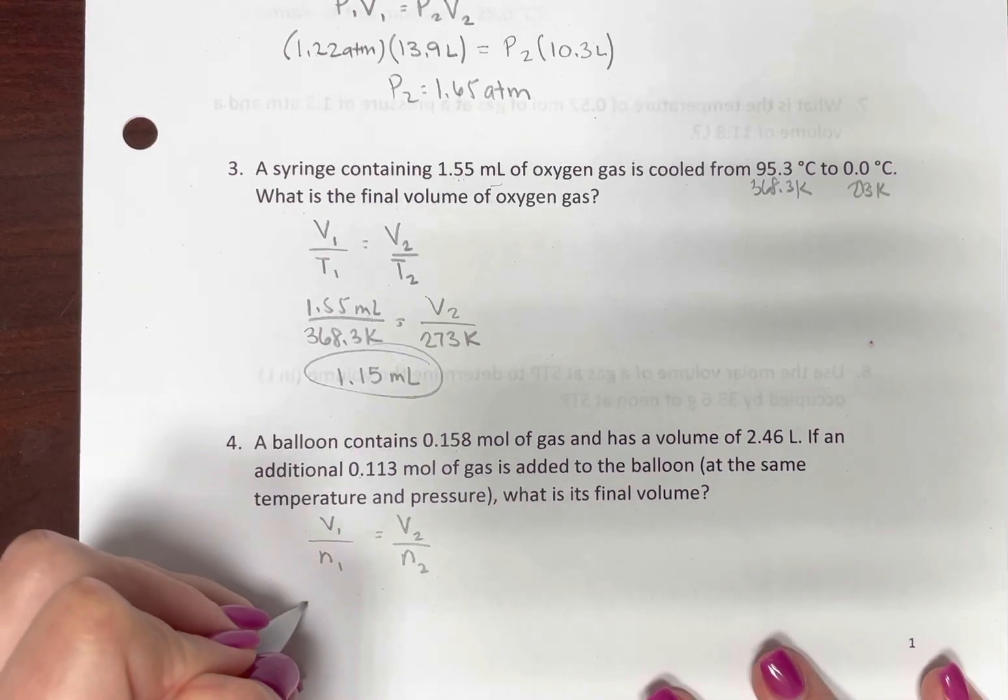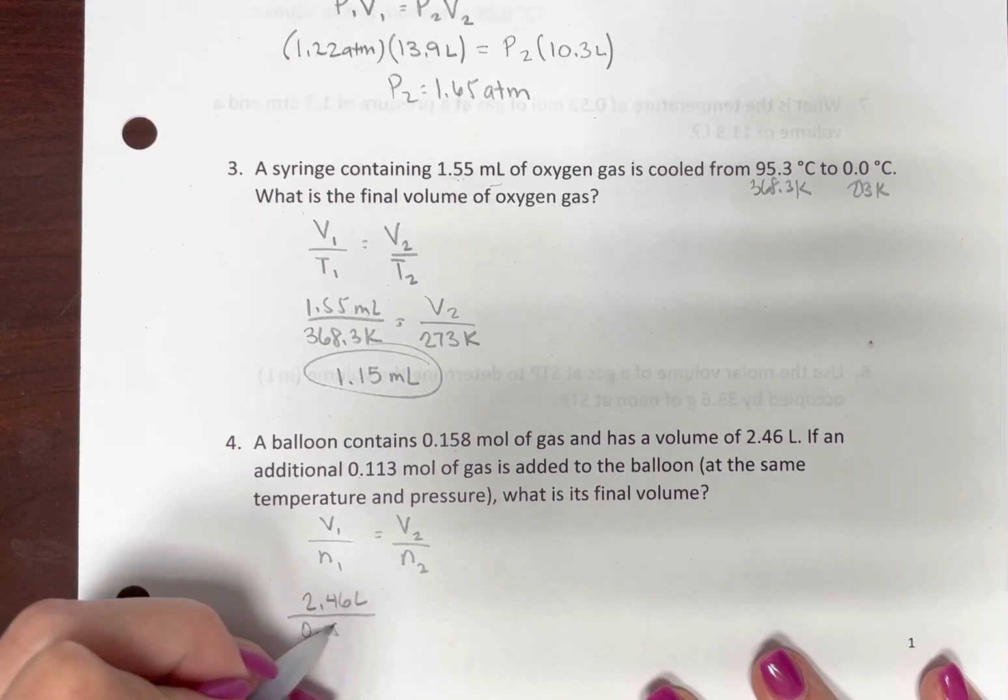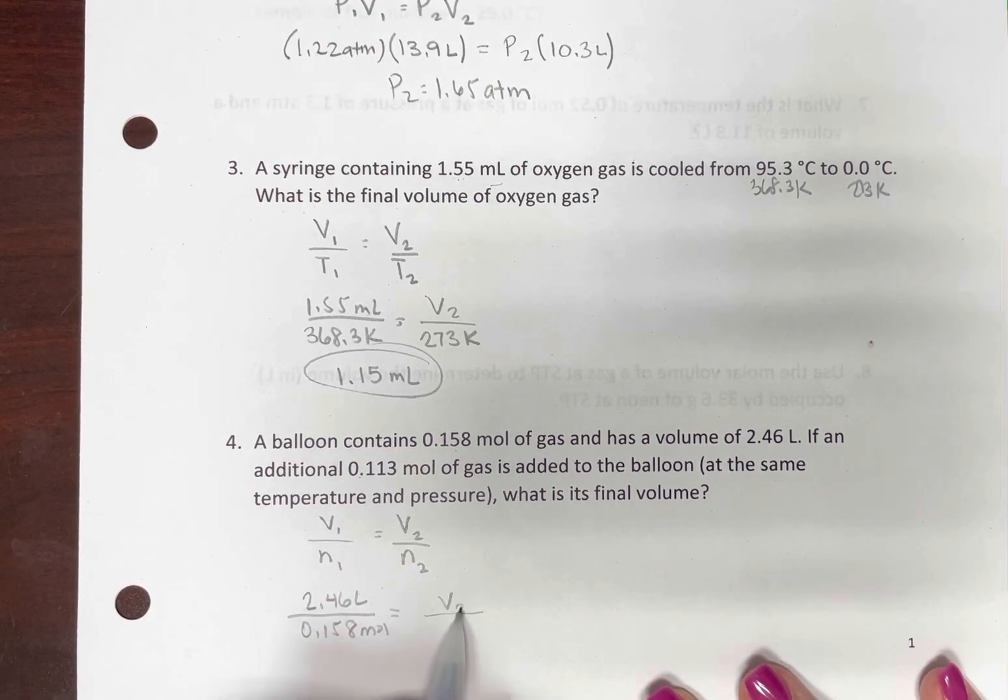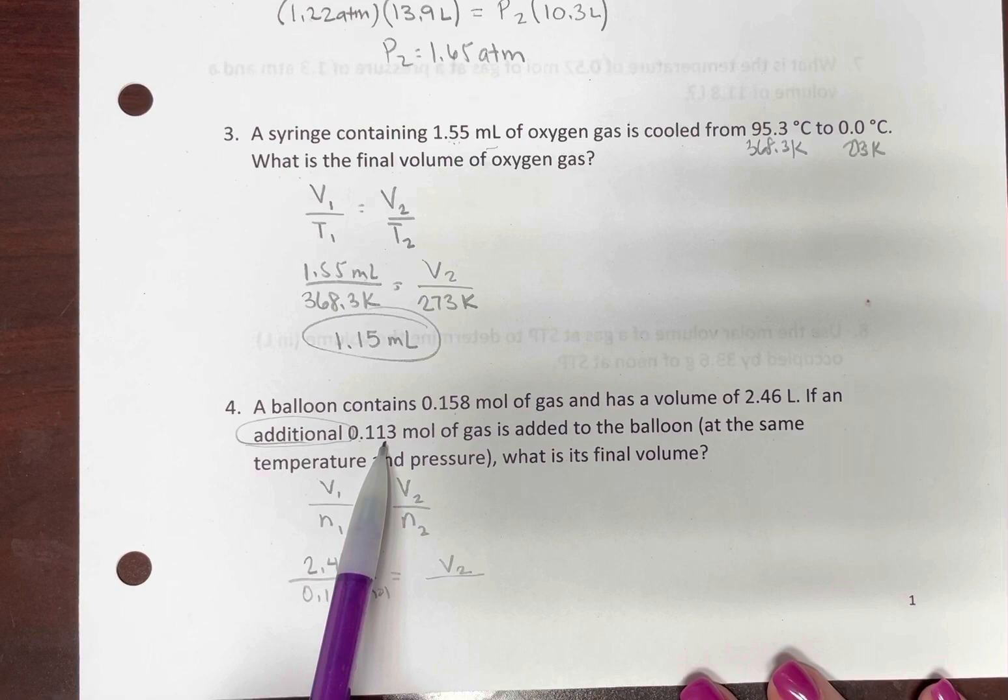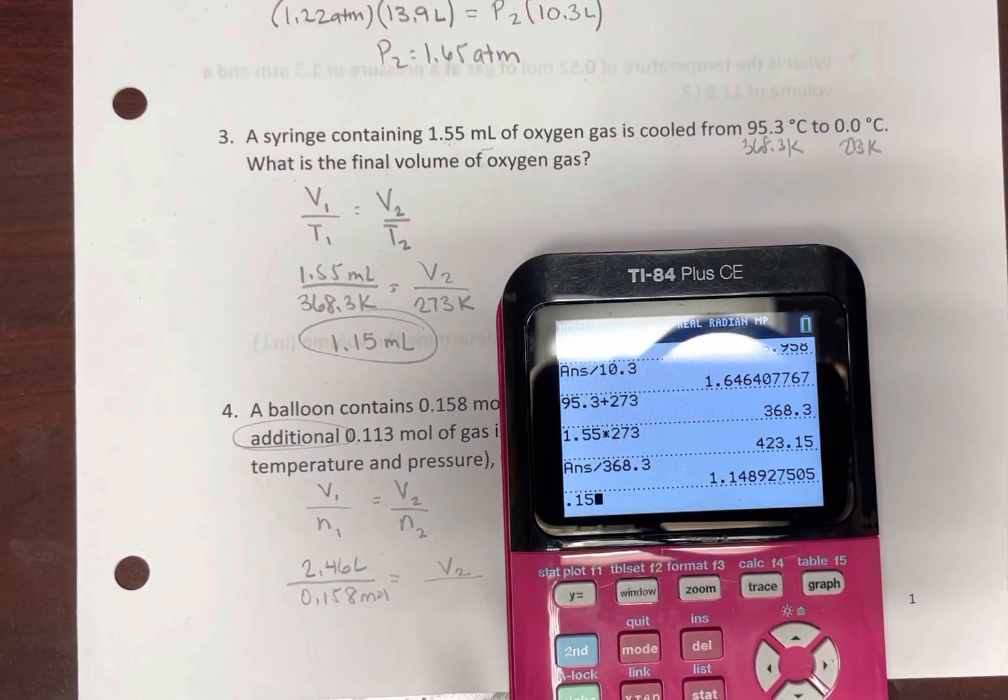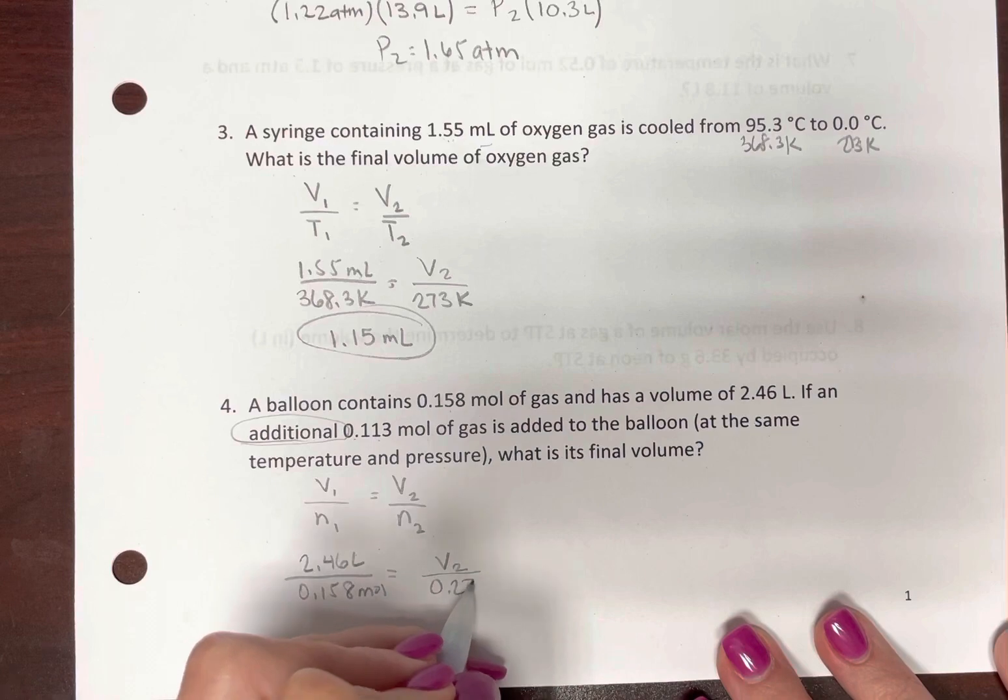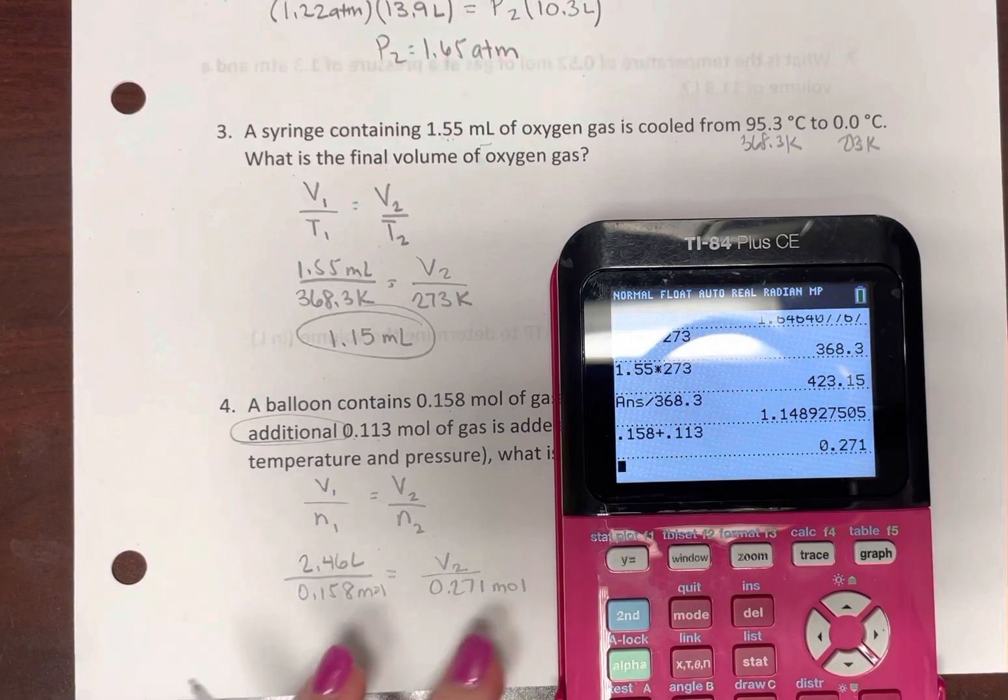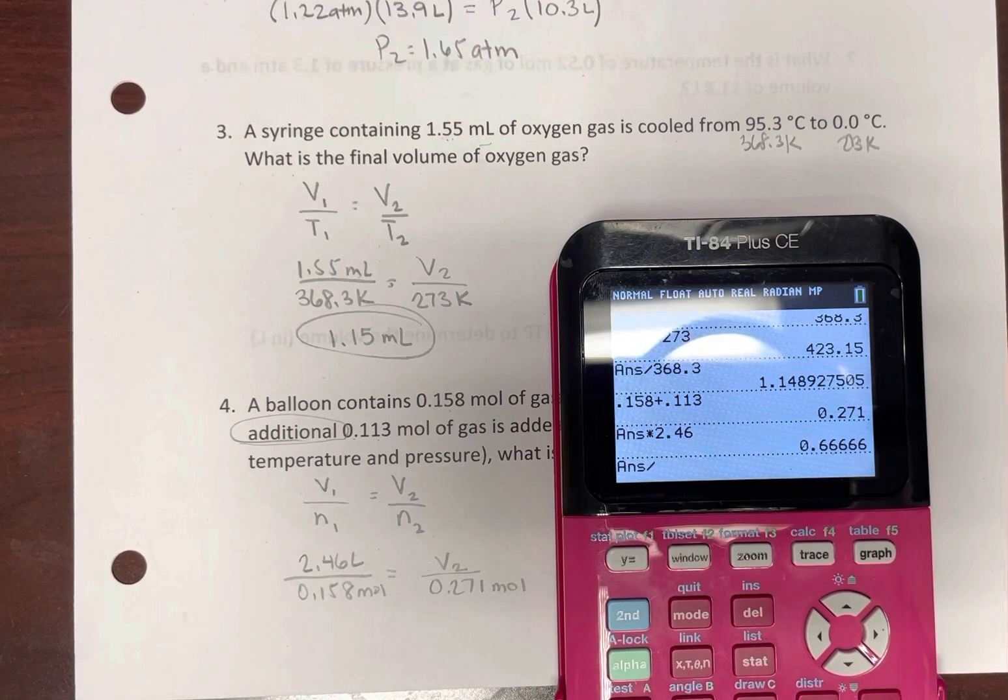Our first volume is 2.46 liters. We start out with 0.158 moles. Now, we don't know what our final volume is. Now be careful here because we're adding this much. This is not N2. You got to do a little bit of math. Read the question. It's a word problem. So 0.271 moles total. Alright, so you got to add those together. So 0.271 times 2.46 divided by 0.158.